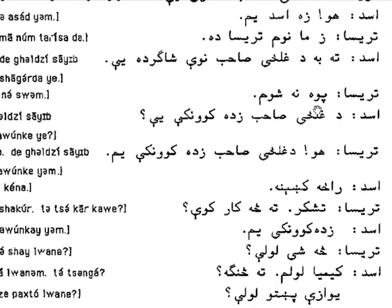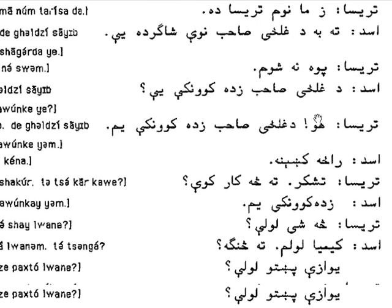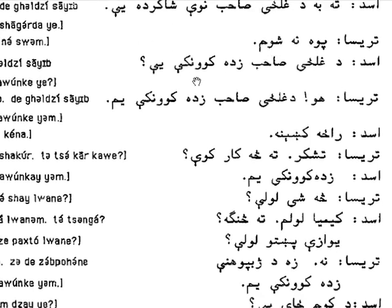Teresa says 'poh na shum.' 'Poh' means 'understand,' 'na' means 'no' — similar to the English 'no.' 'Shum' — so 'poh na shum' means 'I didn't understand.' Teresa responded to Asad: 'de ghilzai saib zdakawun ke yeh' — are you Ghilzai Saib's student?